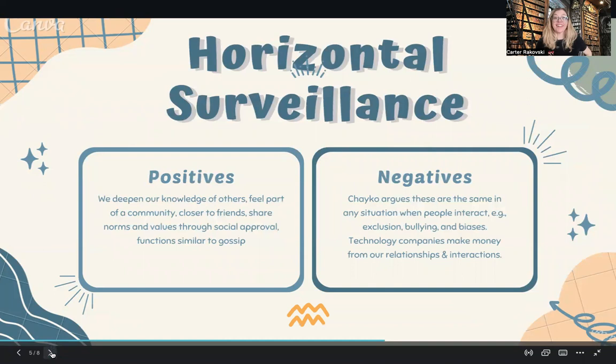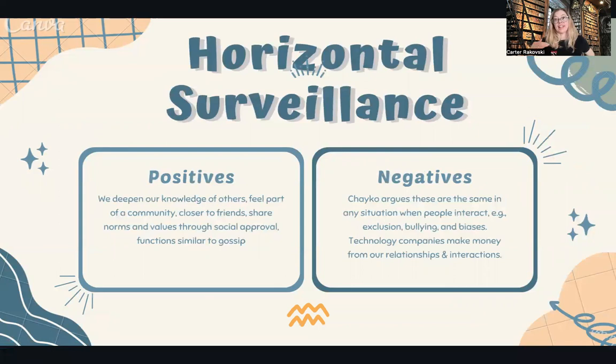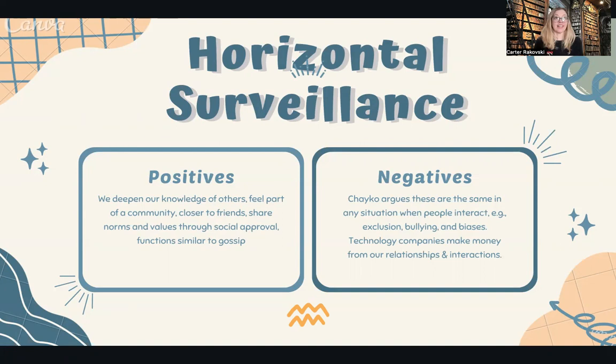Horizontal surveillance is more peer-to-peer. Some of the positives are that we can deepen our knowledge of other people. Of course we love to — like if you make a new friend or start a new relationship, you go back and look at their social media, look at their profile, look at their pictures, get to know them better. So we can deepen our friendships. We also share norms and values through social approval, which is similar to gossip — we've always looked at what our neighbors are doing, commenting on it, gossiping about their behavior.